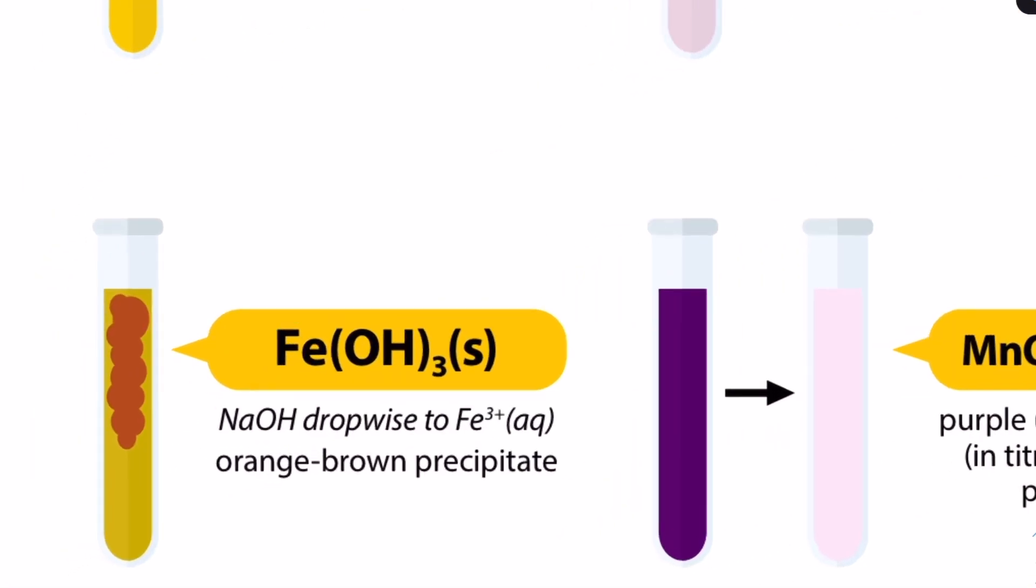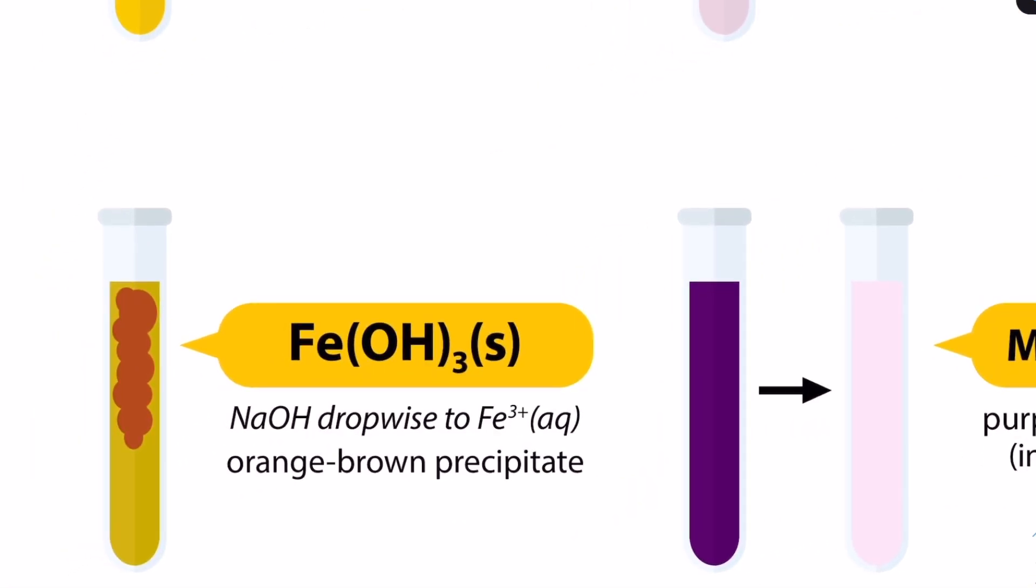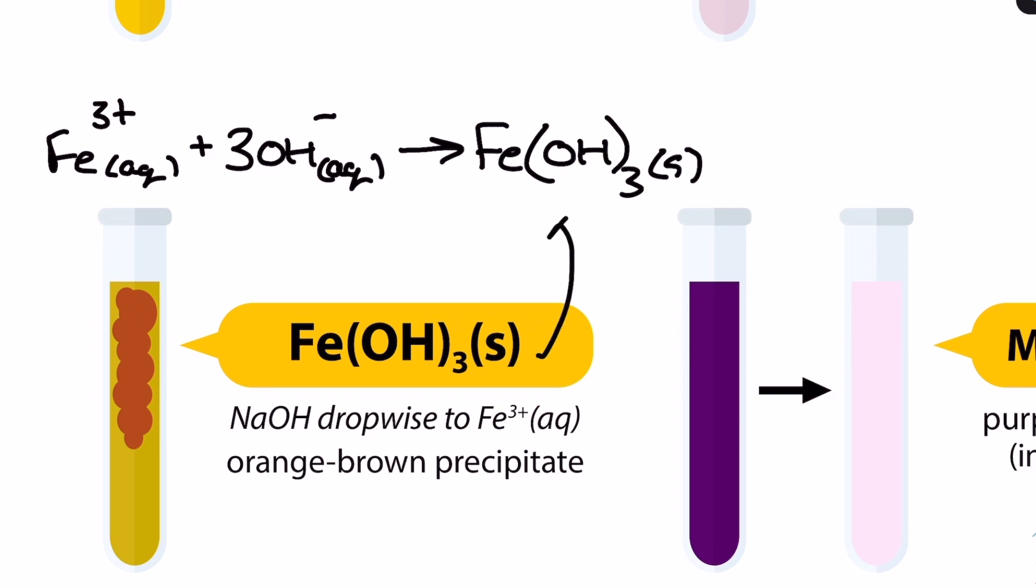Next up, very similar to the precipitation reaction for the iron II ion, in this ionic equation we see the iron III ion forming another hydroxide precipitate when dropwise sodium hydroxide is added. We can see here that the OH- is once again representing this sodium hydroxide to make this orange brown precipitate and again there's no second stage should we use excess sodium hydroxide. This is as far as we can go.